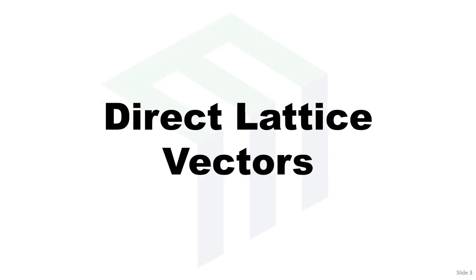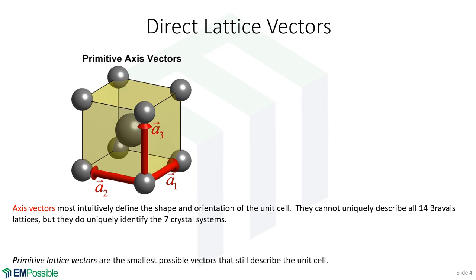The first type and least common type of lattice vector is called an axis vector. These axis vectors point along the edges of what would be called the conventional unit cell. They very intuitively describe the size and shape of our unit cell. The problem with axis vectors is that they only classify the seven crystal systems — they can't uniquely classify all 14 Bravais lattices.